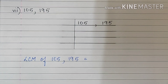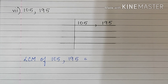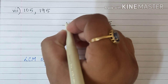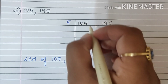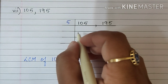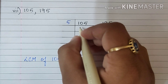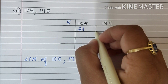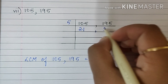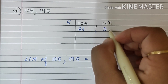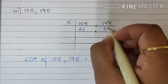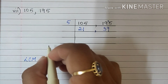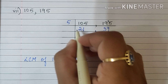Sum number 7: 105 and 195. Again both are ending with the number 5, so we will begin with 5. They are also divisible by 3 but we will begin with 5. 5 2s are 10, 5 1s are 5, 5 3s are 15 carry 4, 5 9s are 45. Now this will be divisible by 3.